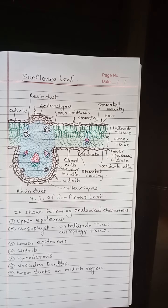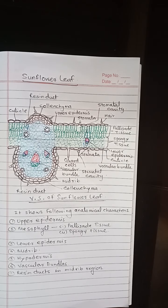The Upper Epidermis is a single layer consisting of isodiametric parenchymatous cells which are compactly arranged, and some stomata are also present on the Upper Epidermis. It is covered by a cuticle, and hair-like trichomes are also present on the Upper Epidermis.